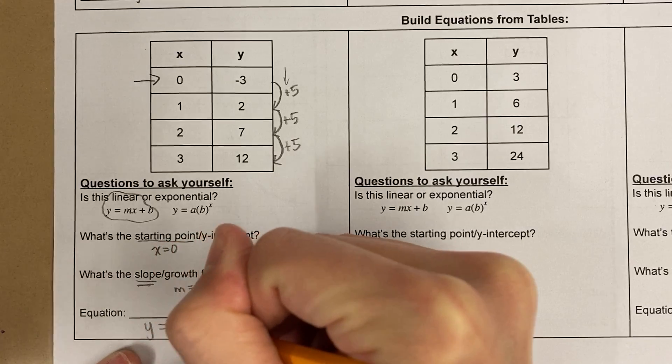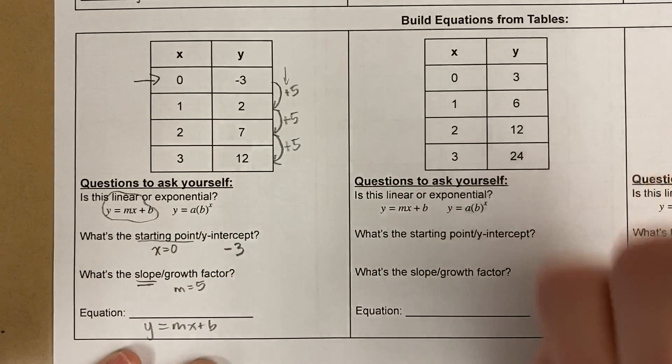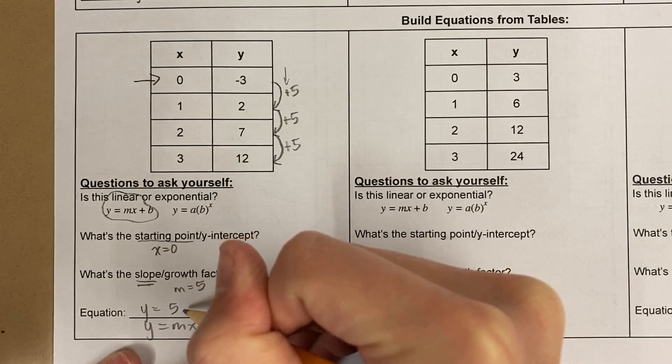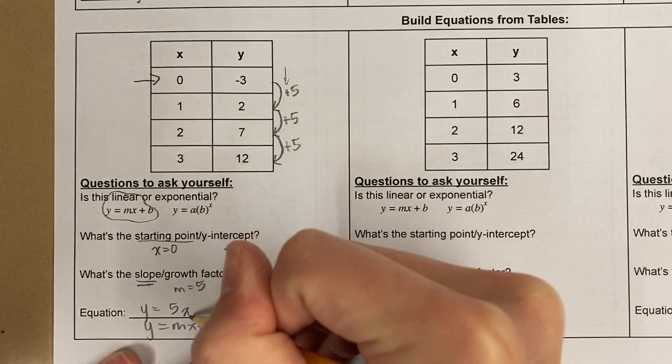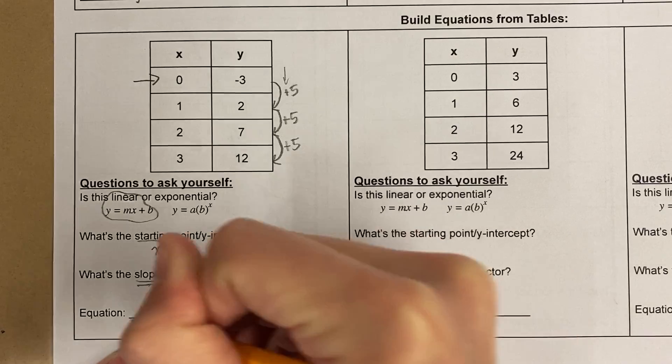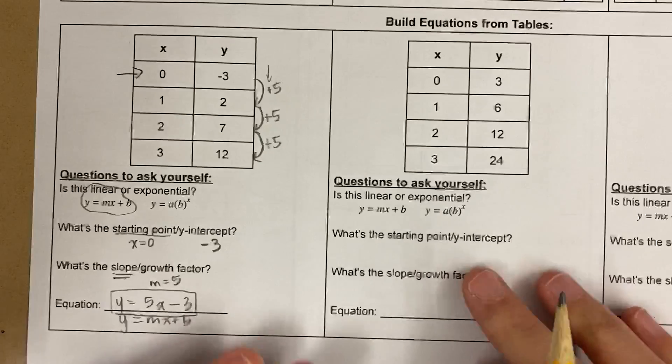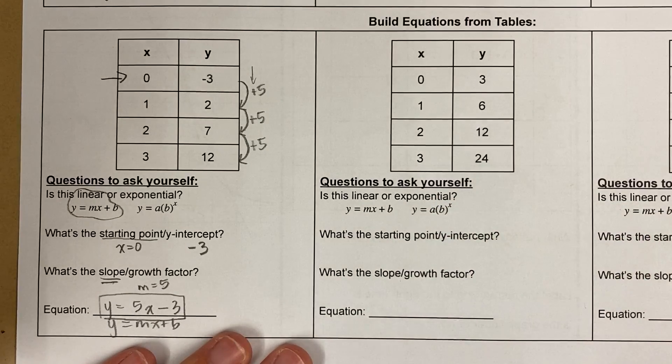So when I write my equation, y equals mx plus b, I'm simply writing y equals my slope times x and then my y-intercept. Now if you want to pause the video right here, that would be good. I'm gonna do one more, but you should pause and try it first.